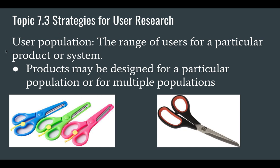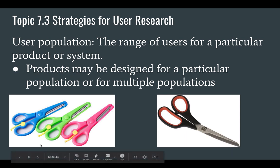So to start with, this is a term that we need to know. It's called the user population. This is the range of users for a particular product or system. When we are talking about a user population and the products that we design for them, we can design for a specific population. For instance, we might design for children — so these are some children's scissors.